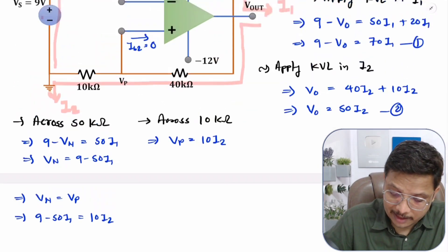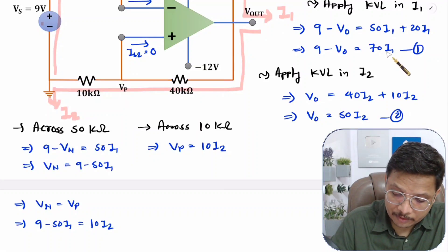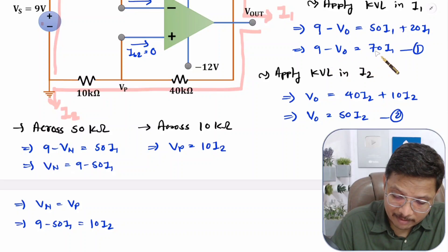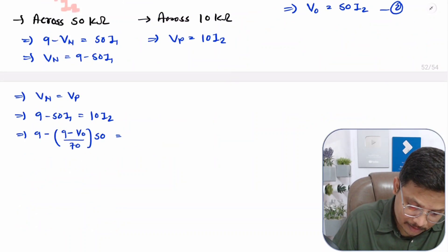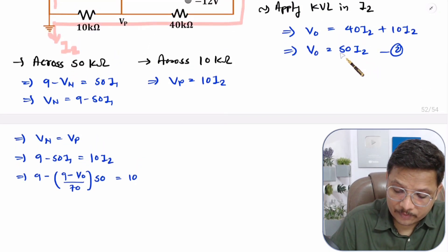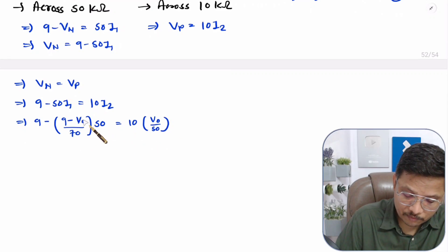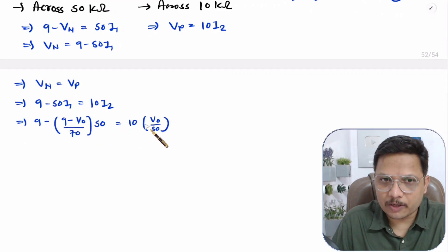Since Vn equals Vp, we write: 9 minus 50 I1 equals 10 I2. Now we substitute I1 and I2 from our KVL equations — I1 is (9 minus V0) divided by 70, and I2 is V0 divided by 50. So now we have an equation in which V0 is the only unknown.